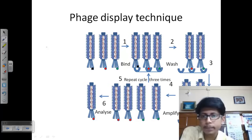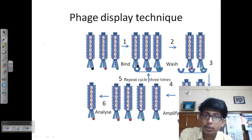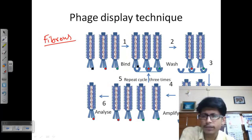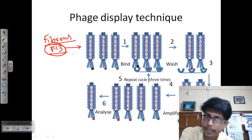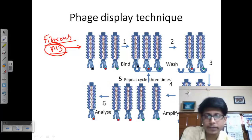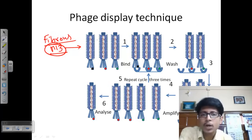The idea behind phage display is to find out a specific protein inside a cell and also to find out which other protein that protein is interacting with. What we do in this case is we use a filamentous phage — for example, M13. M13 is a filamentous vector phage whose structure is just like a filament. Inside this vector phage there is double-stranded DNA present as genetic material, and there is a phage coat, denoted here with the blue color segment.